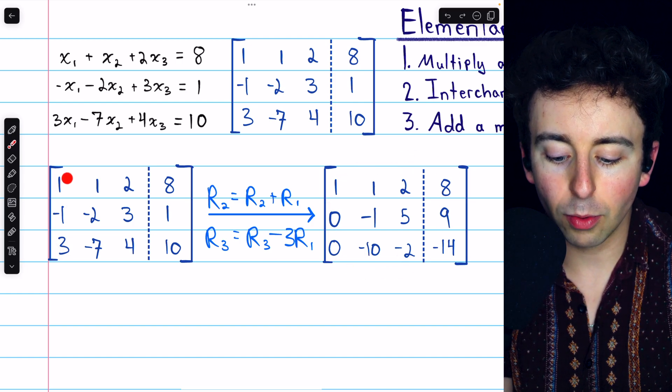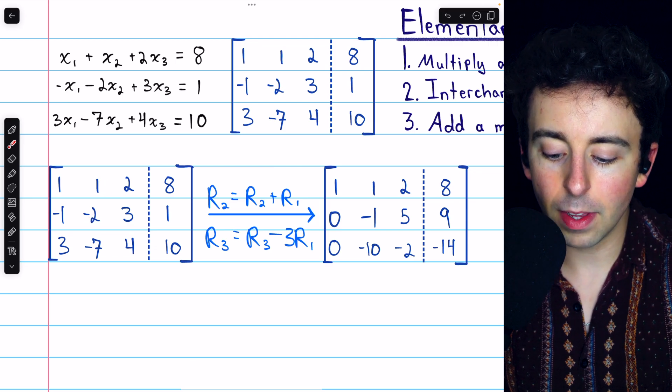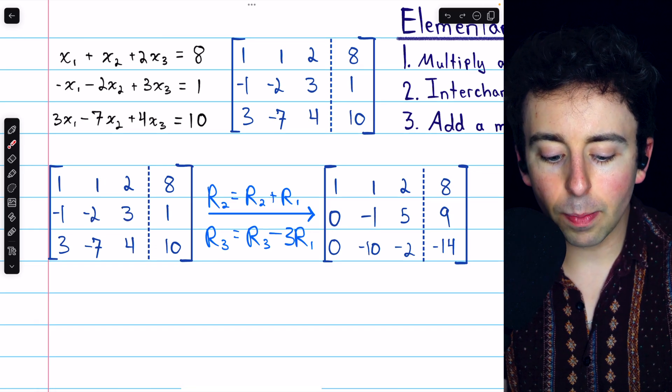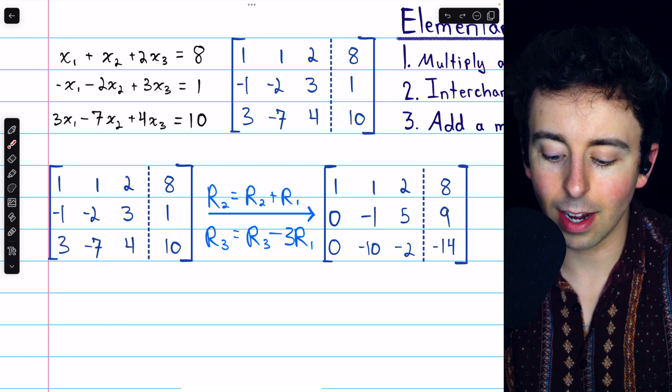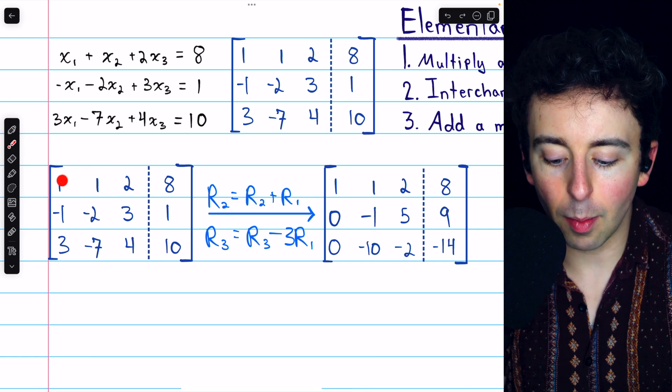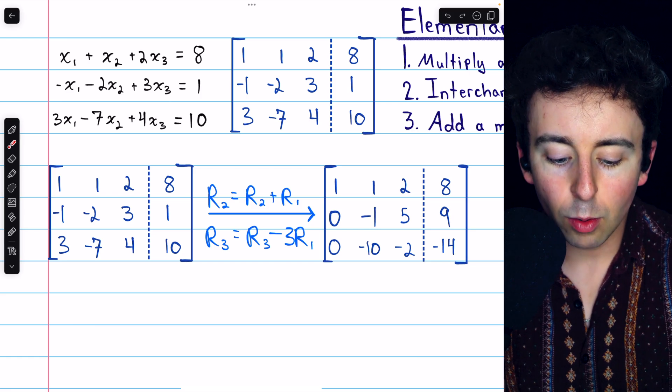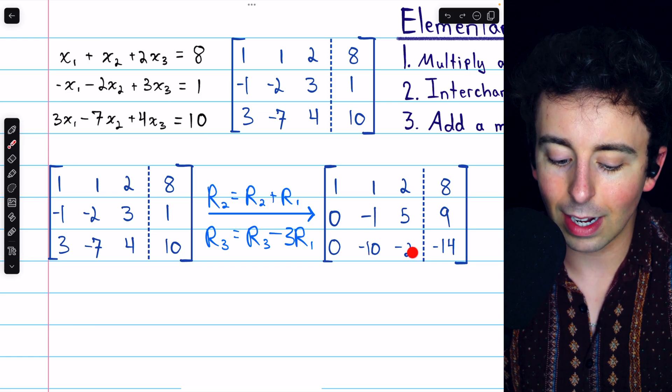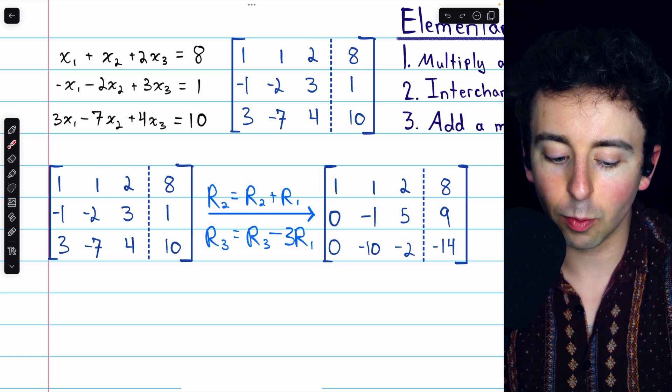Negative 1 plus 1 times 1 is 0. Negative 2 plus 1 times 1 is negative 1. And 3 plus 1 times 2 is 5. 1 plus 1 times 8 is 9. As for row 3, 3 minus 3 times 1 is 0. Negative 7 minus 3 times 1 is negative 10. 4 minus 3 times 2 is negative 2. And 10 minus 3 times 8 is negative 14.